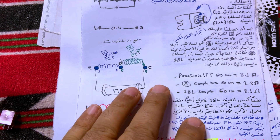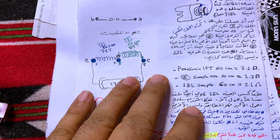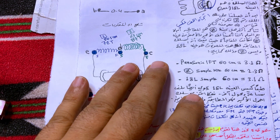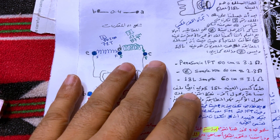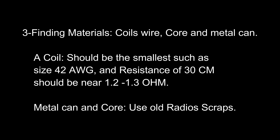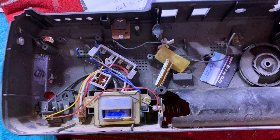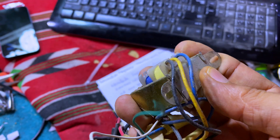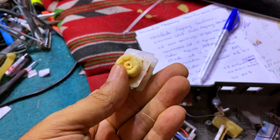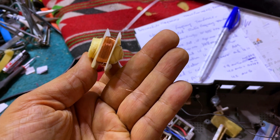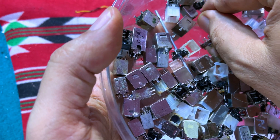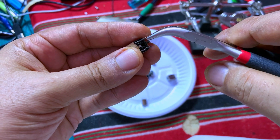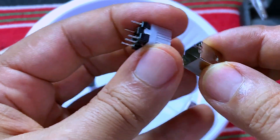This transformer is most often used in the second IF amplification stage, and its color variety is white. To source the wire, find a scrap transformer from an old 6-volt radio cassette player, dismantle it, and use the primary wire — approximately 42 AWG. Thirty centimeters of it should measure 1.2 to 1.3 ohms, which is best quality. For other components, use scrap from old radio cassette PCBs and modify them according to your needs.